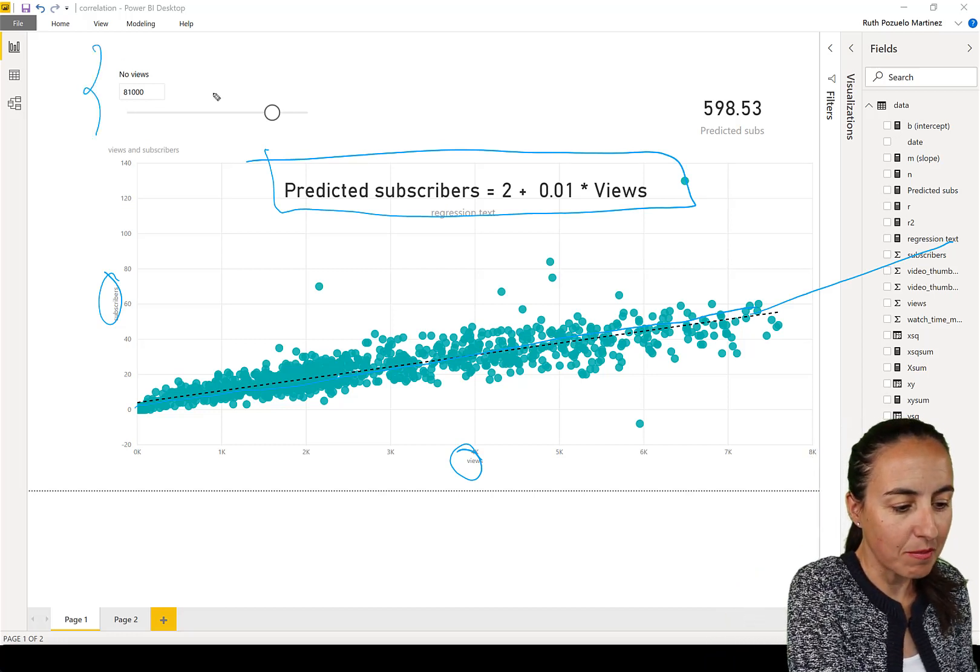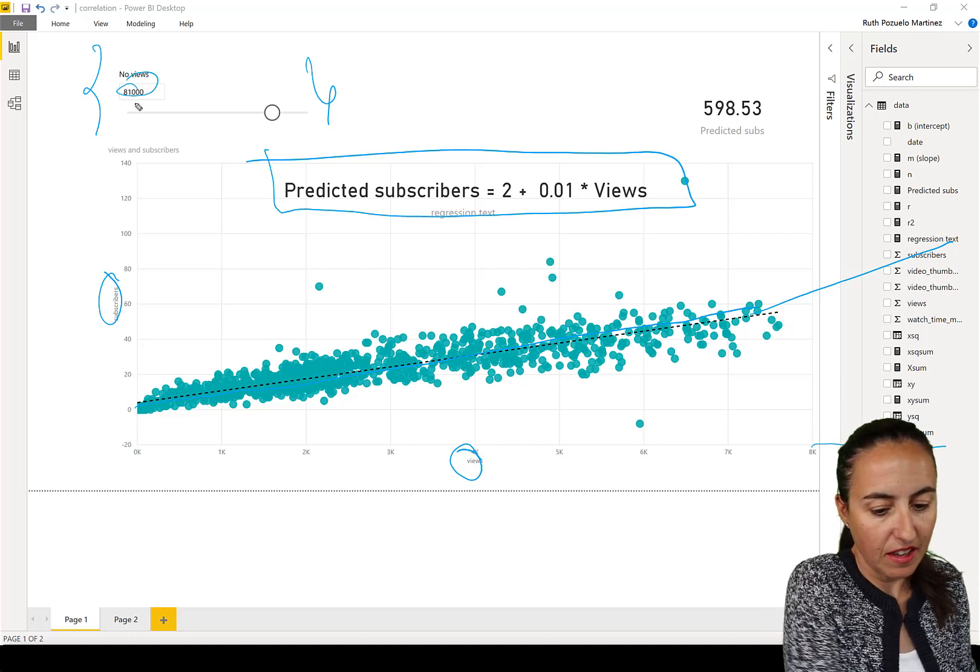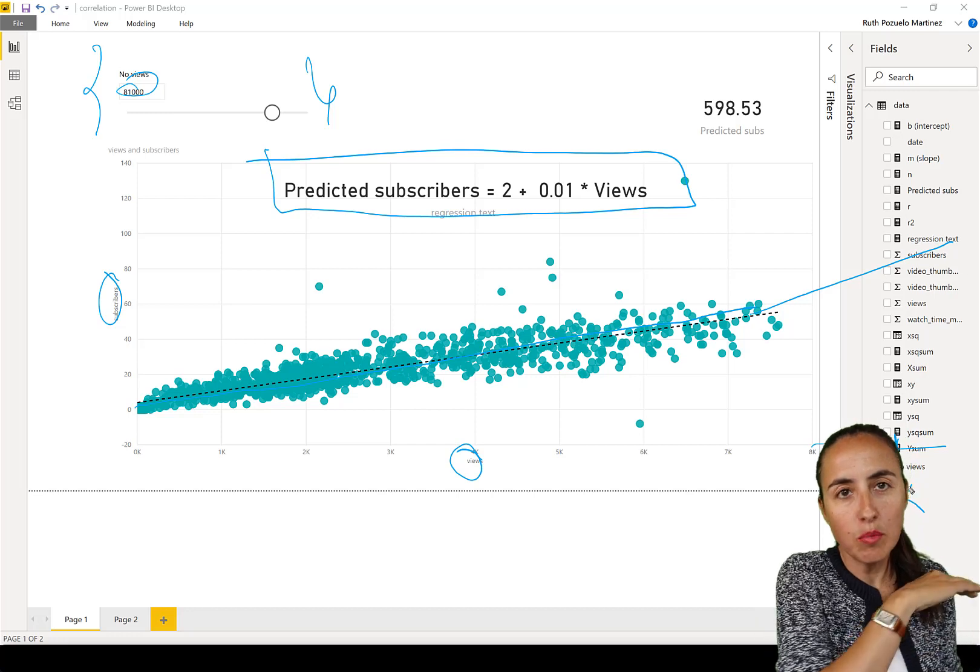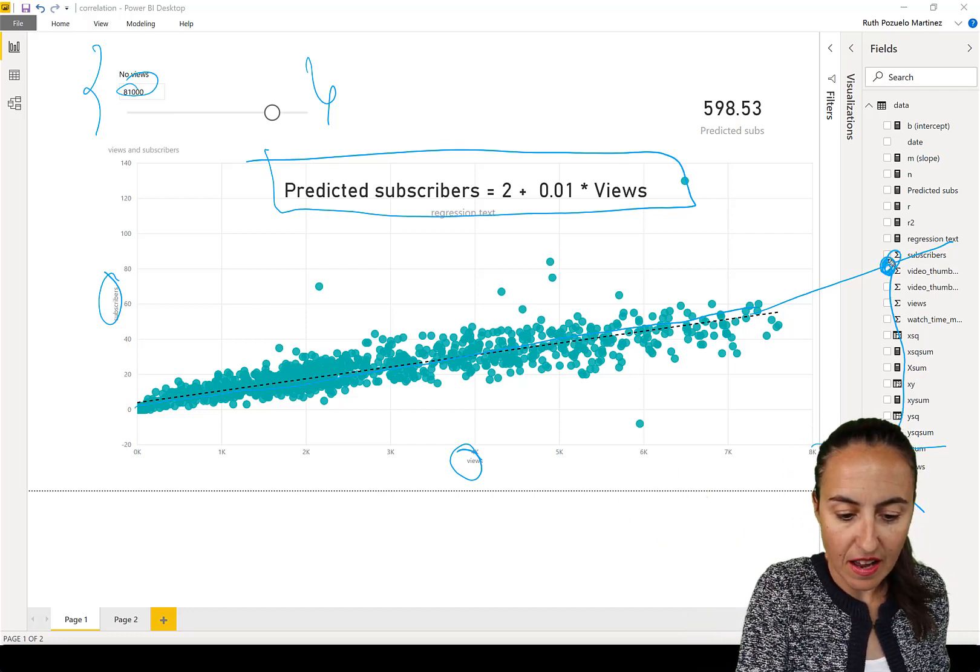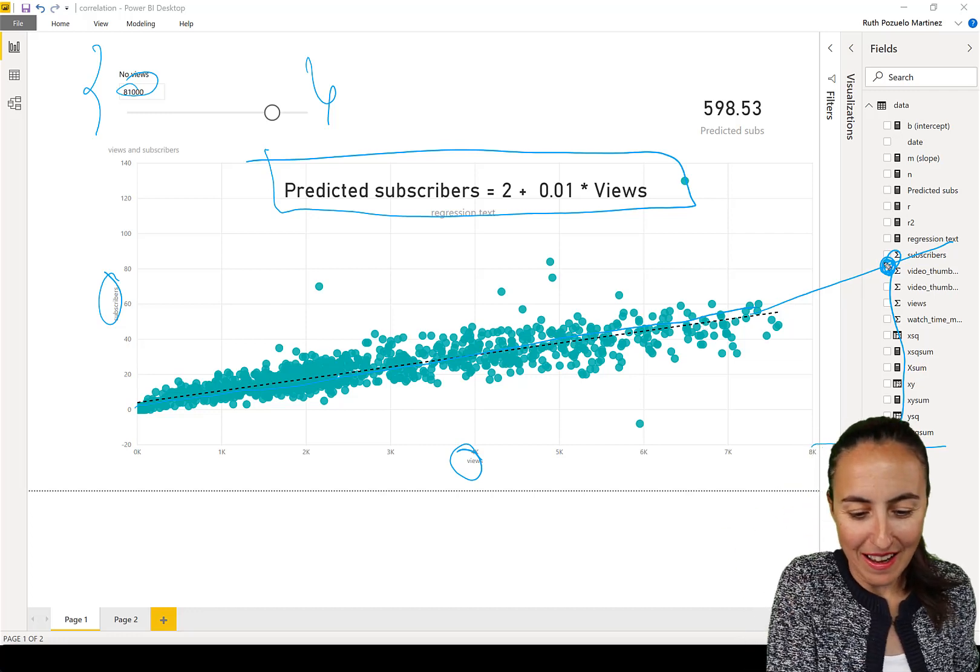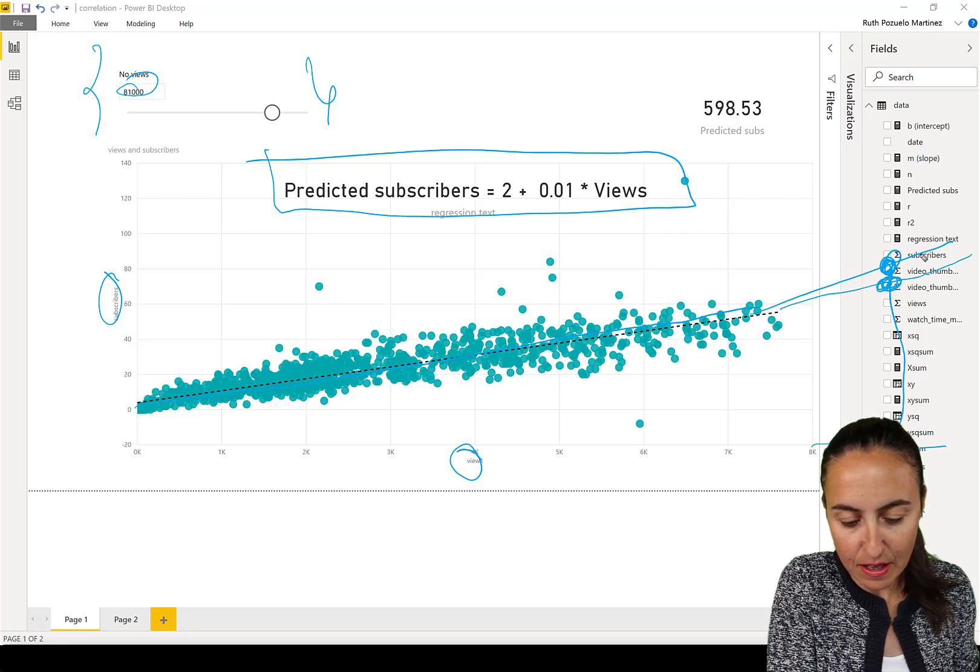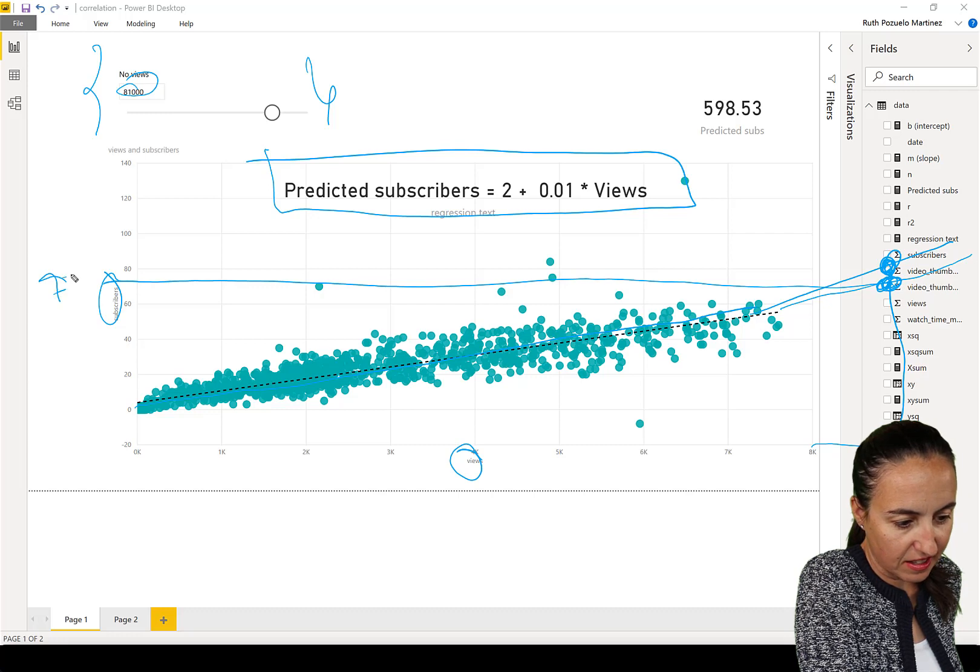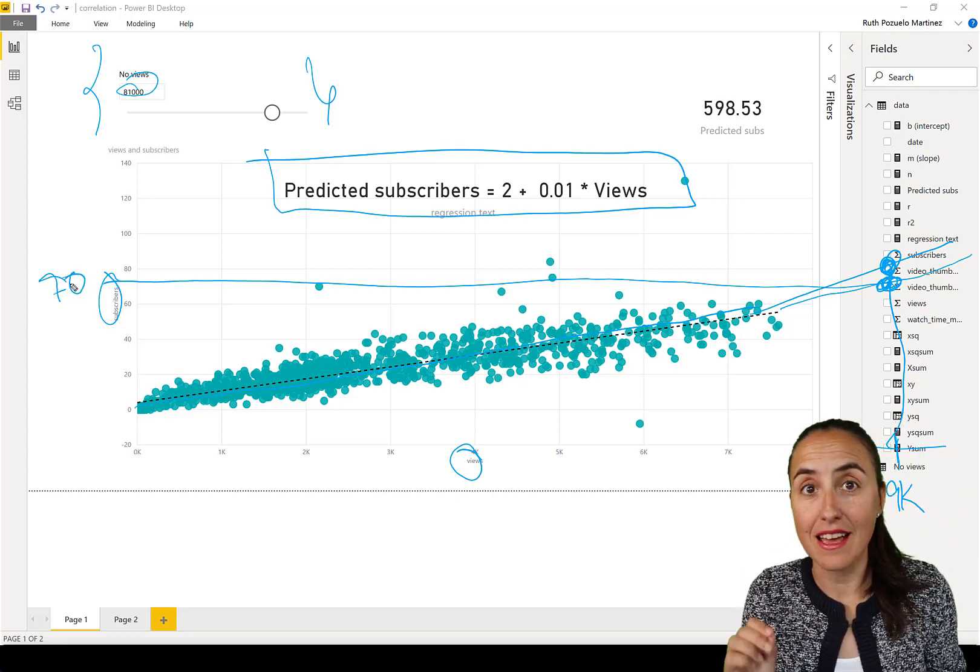So we created a parameter here for the number of views and we could actually pick a value in there. Let's say that we pick here 9000 and because our data points follow a line, we can actually go up here and understand, okay, my line is a little bit up, but if we would follow the line there, you will get the number of subscribers here. So we could go back and say, okay, this is like 70 subscribers or 75 subscribers if I would get 9000 views.